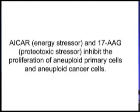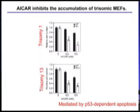I'd like to show you one piece of data about two of those compounds. One is an energy stressor, the other a proteotoxic stressor. We found that they selectively inhibit not only the proliferation of aneuploid primary cells but also aneuploid cancer cells. Here are data for the effects of one compound, ICAR, on the trisomic mouse cells I introduced earlier. Treating them with ICAR has selectively more significant effects on the growth of trisomic compared to normal cells.